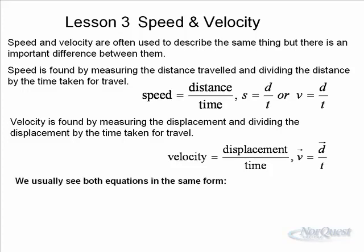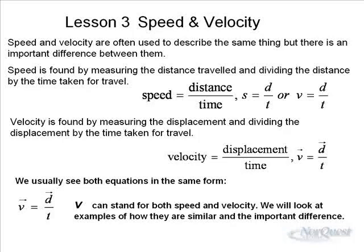The equations are basically the same form. V equals d over t. And v can stand for both speed and velocity. Let's look at some examples of how they are similar and how they are different.